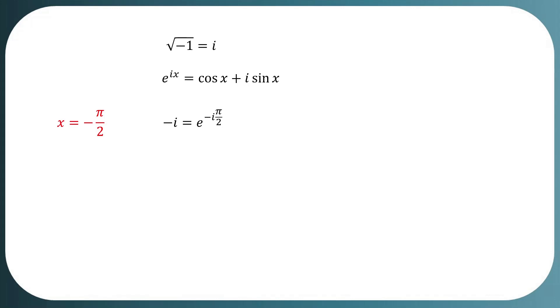Now, raising exponent by iota on both sides, we get negative iota to the iota is equal to e to the negative iota times pi by 2 to the iota power.